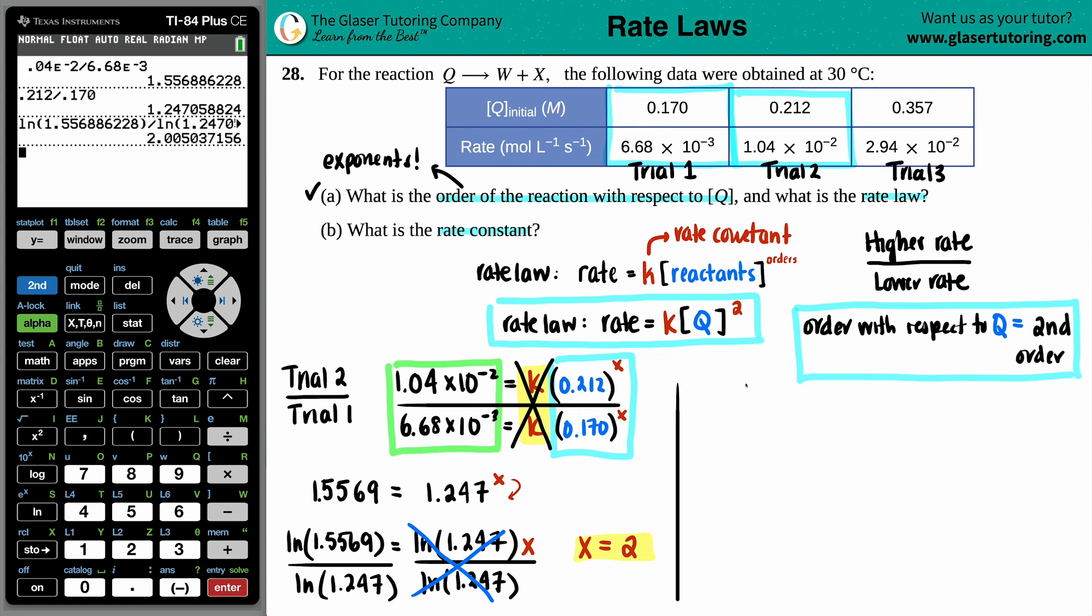Letter B says we want to find that rate constant. Now remember, the rate constant is the K value. Now different teachers maybe want you to do this differently. But majority of the time, teachers or professors are cool with just having you pick one trial. Some textbooks might teach it to you as you have to find the K for all three trials and then find the average to get a rate constant. But the K values between the trials are so very similar that the average is going to basically be the same as the trials. So what I'm going to do is I'm going to mix and match. Since I used trial one and two to find the rate law, I'm going to use trial three to find the K value.